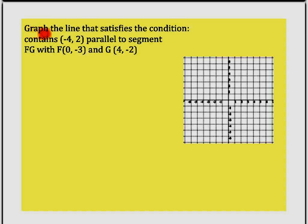These instructions say graph the line that satisfies the condition: contains the point negative 4, 2 and is parallel to the segment FG where F is at 0, negative 3 and G is at 4, negative 2.